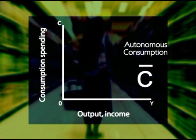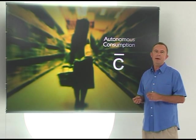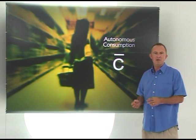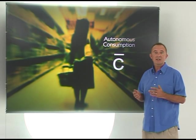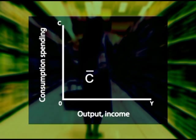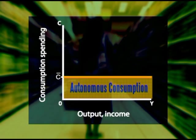Autonomous consumption, C bar, is that part of consumption spending that is independent of the level of income. We've seen that even if income's zero, some consumption spending still takes place. And this is why, in this graph, autonomous consumption spending starts at a point on the vertical axis above zero.